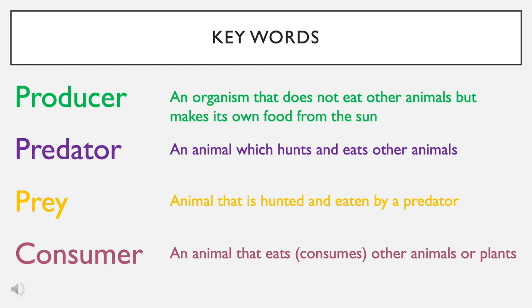We also have organisms that can be predators, and predators are animals which hunt and eat other animals. We can have prey organisms as well — these are animals that are hunted and eaten by predators. And finally, we can also have consumers. Consumers cover a lot of different organisms, and all they describe is an animal that eats or consumes other animals or plants.